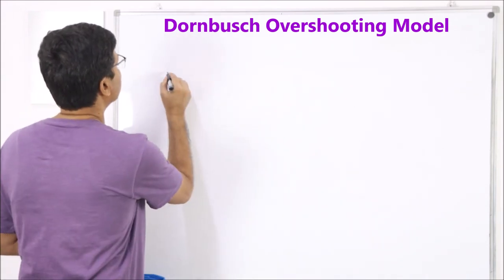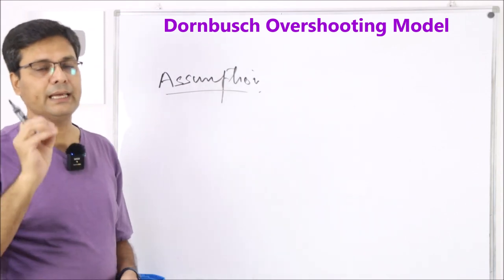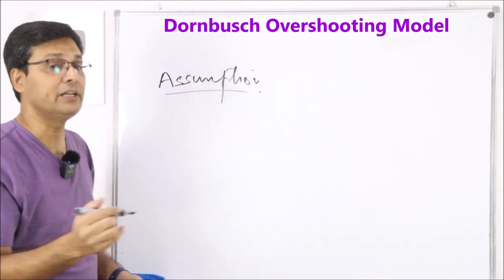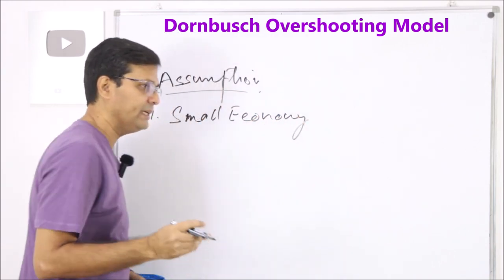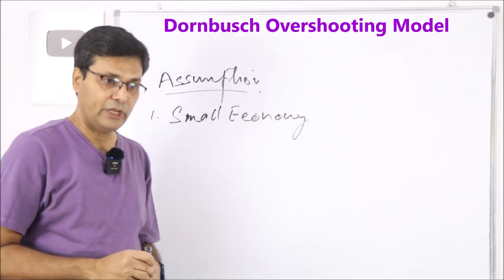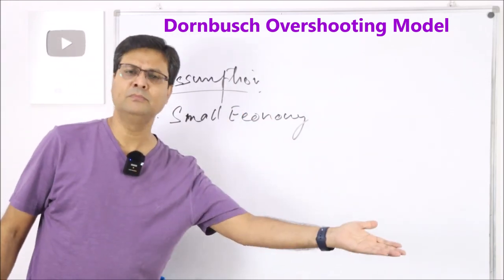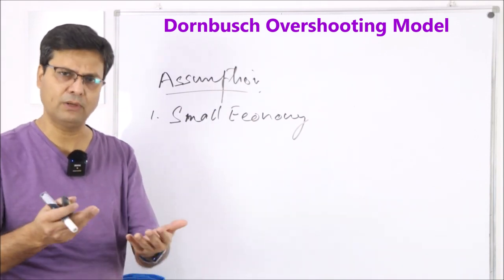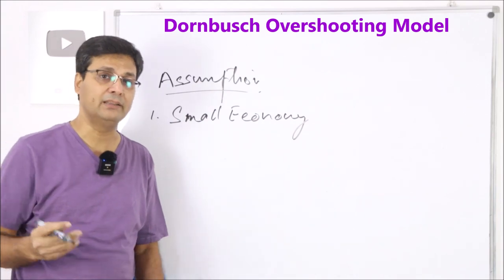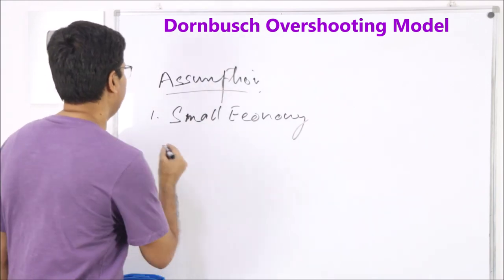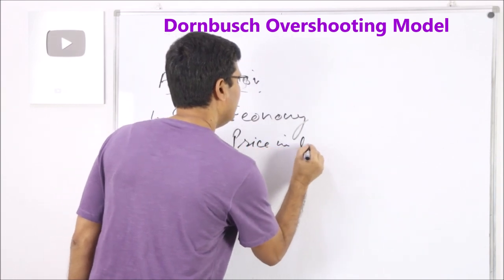Now let's start with some main assumptions. There are other assumptions but I will focus on the main ones. First, in this model we assume a small open economy — we are not dealing with a large economy. Second, there is a sticky price in the goods market, meaning prices in the goods market do not adjust immediately.